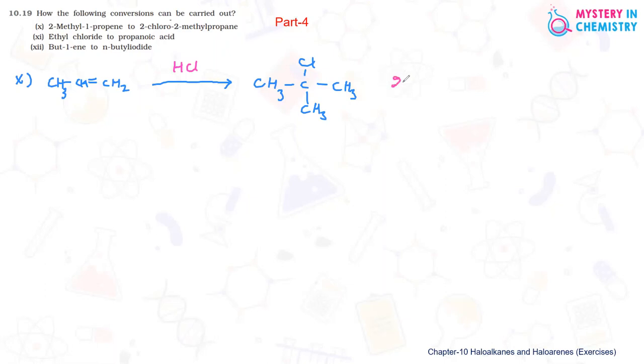The final product formed is 2-chloro-2-methyl-propane, with the structure CCH3 here, CH3, and chlorine attached.